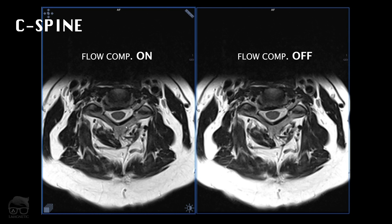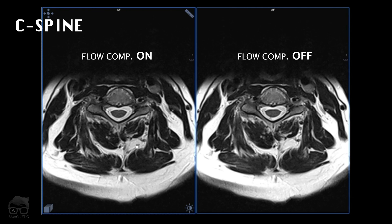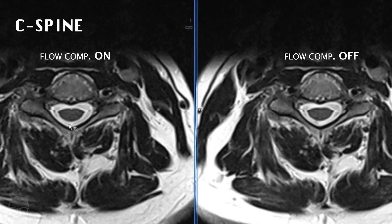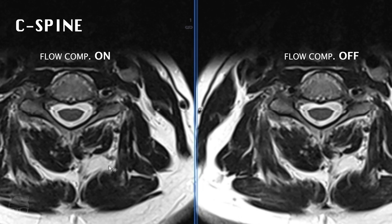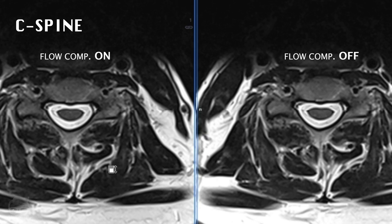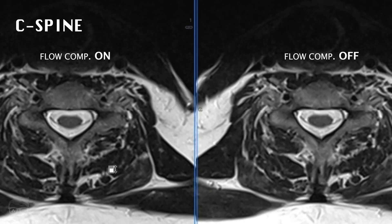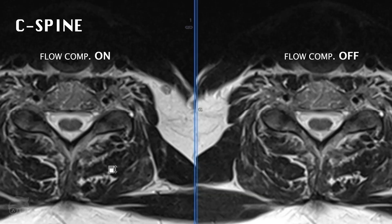Let's move to the last part — the C-spine. The first image is slice compensation on, second is off. I'm not quite sure if there are any big differences. My conclusion for this test: for the L-spine, I'm pretty sure I could turn it off. For the T-spine and C-spine, it's a little more difficult — need to test more. People are saying it should be on, but there are not big differences here.